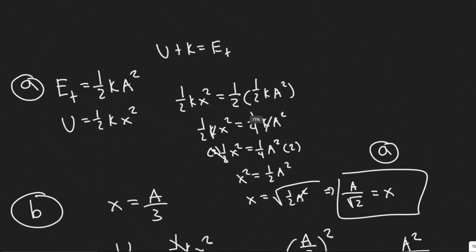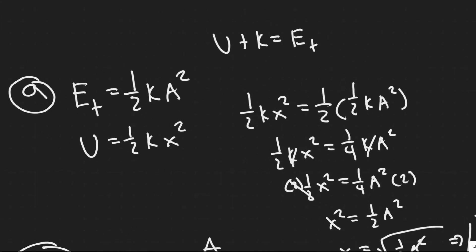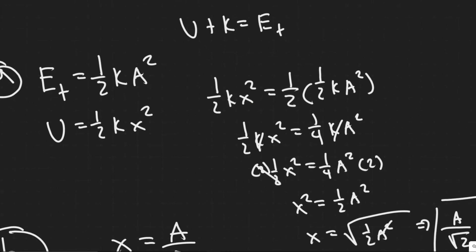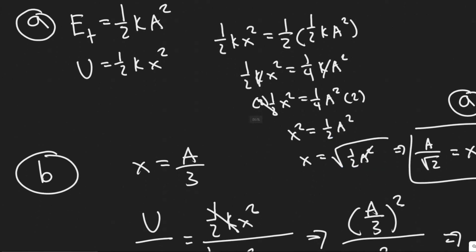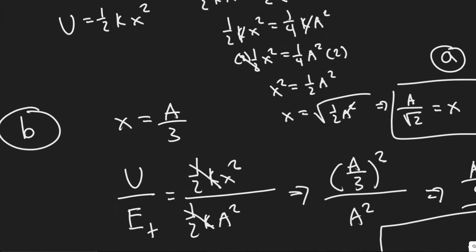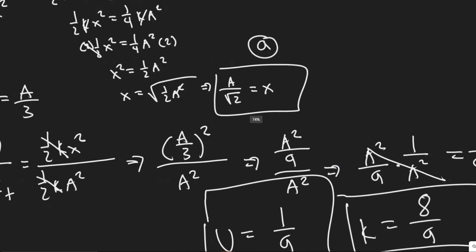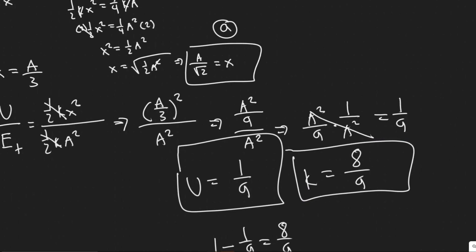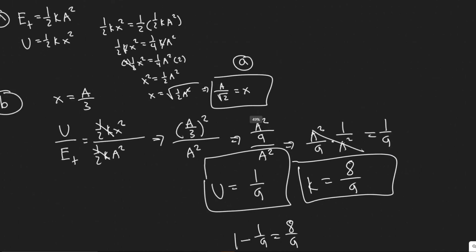Just a quick summary of what we did. For part A, I knew that if I could find when the potential energy is one-half the total energy, I could solve for the displacement x at which they're both half — half kinetic, half potential. And then for part B, we found the ratio of potential to total energy, and from that we could solve for how much is kinetic. So those are your answers.